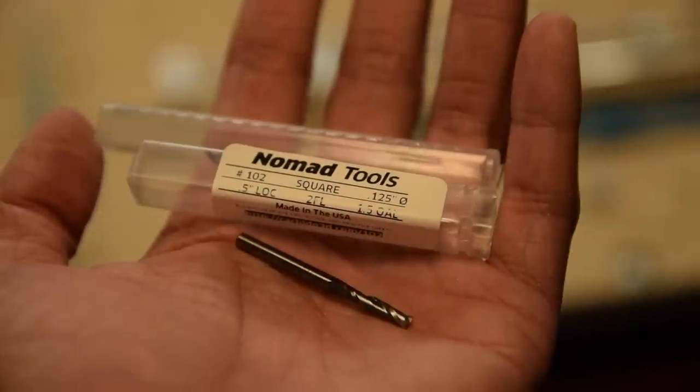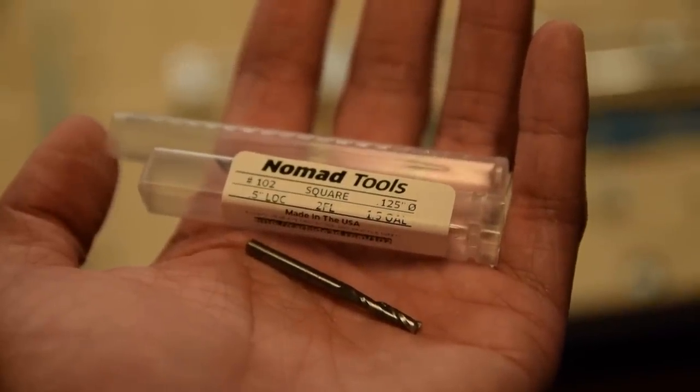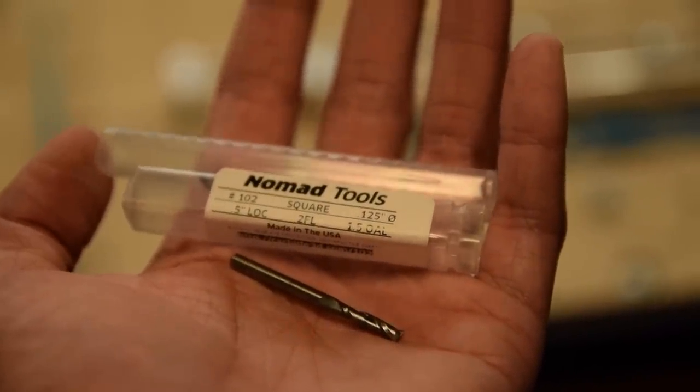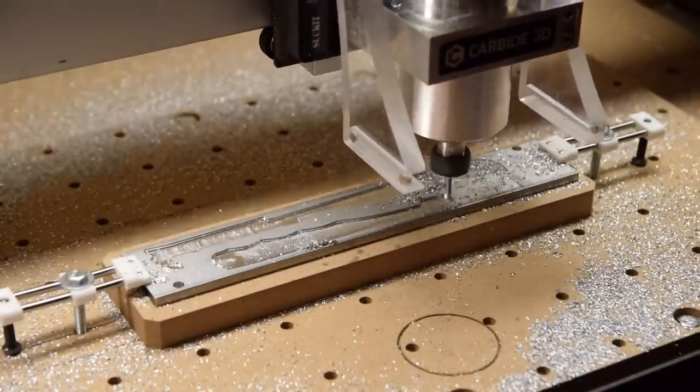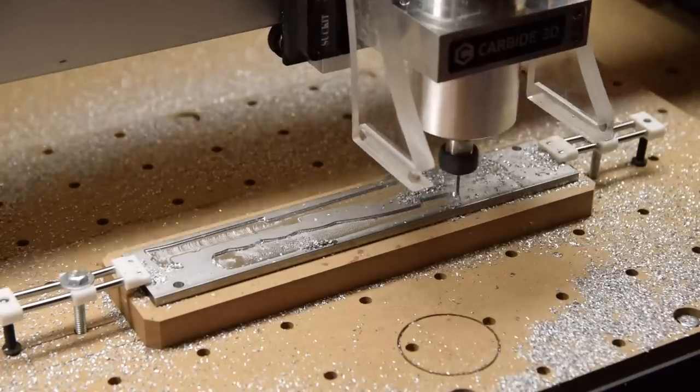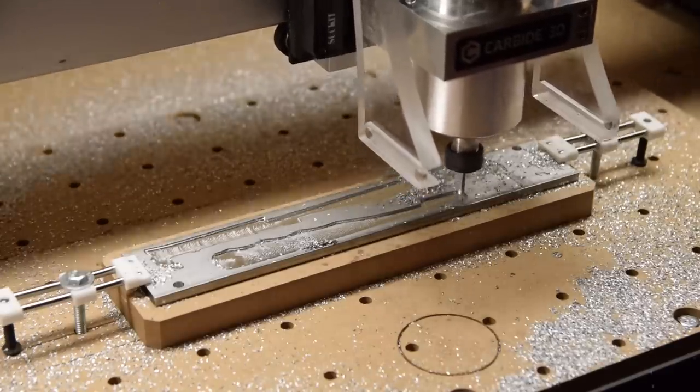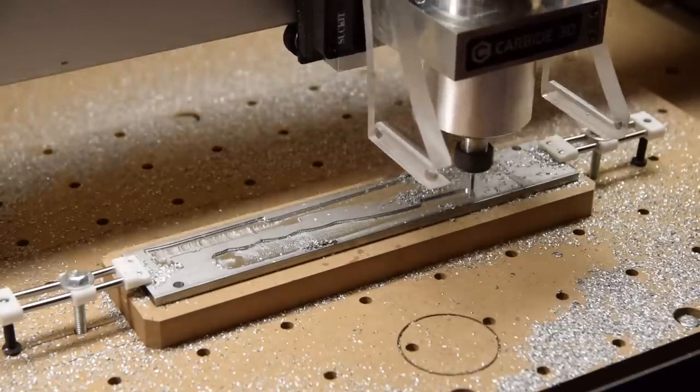By the way, for these operations, I'm using an uncoated eighth inch end mill from Carbide 3D. Really nothing special. My inventory of coated eighth inch end mills is pretty much exhausted and I haven't had a chance to restock yet, but I just wanted to point this out to show you guys that there's nothing wrong with using general purpose tooling to cut aluminum.